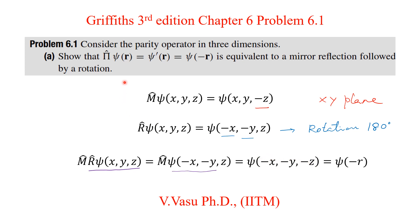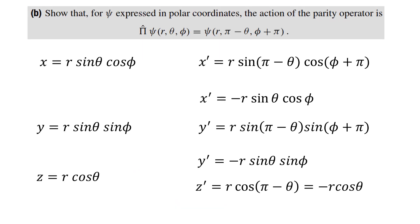So we have proved that the parity operator is equivalent to a mirror reflection followed by a rotation. Then we will move on to section B. In section A we dealt with Cartesian coordinates; now we will deal with polar coordinates.